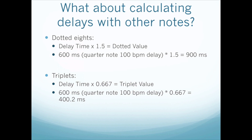You can also calculate delays using other note values. Quarter notes are the most common, but you could do dotted eighths or triplets. For dotted eighths, take your delay time and multiply by 1.5. For triplets, multiply by 0.667. Triplet or dotted note delays can sometimes work a little better in a track and give you more of that 'glue' — that cohesiveness — so they blend a little better.